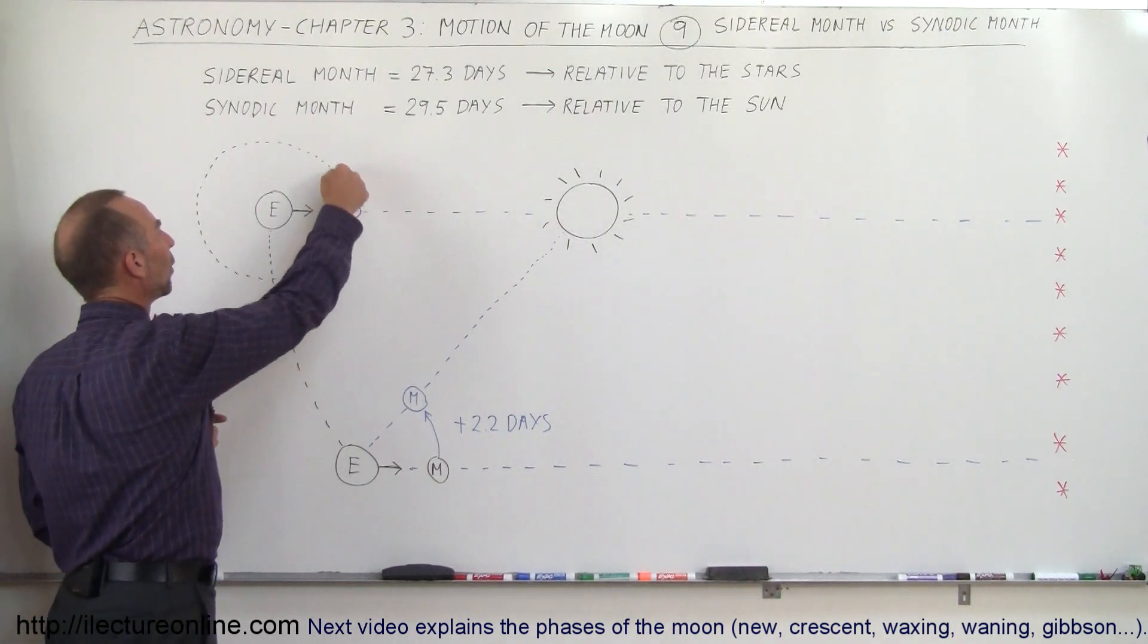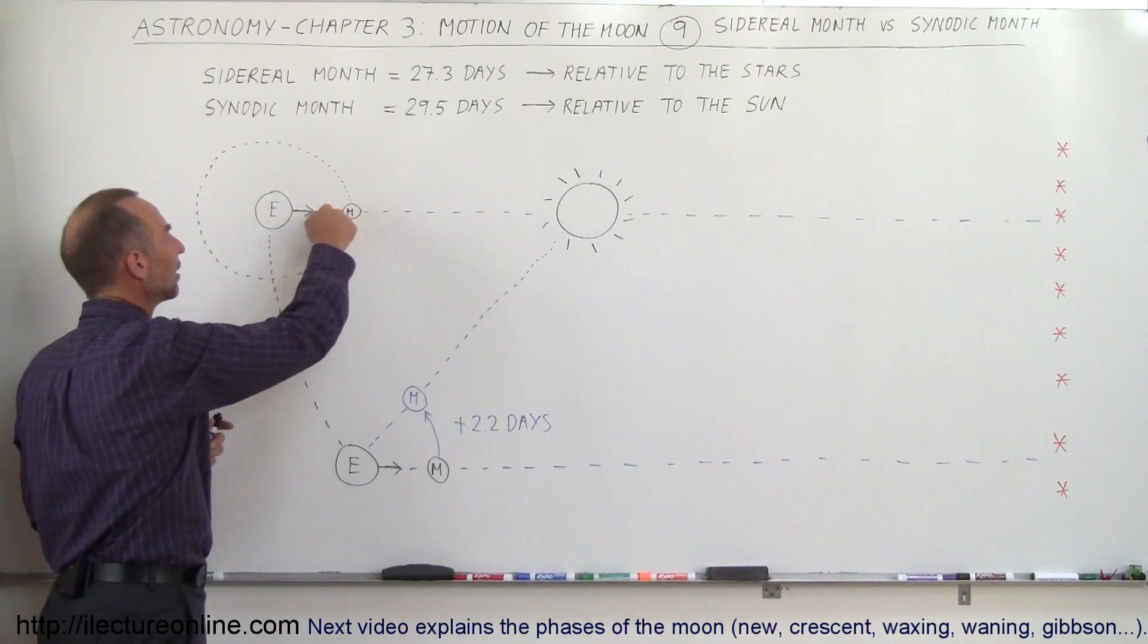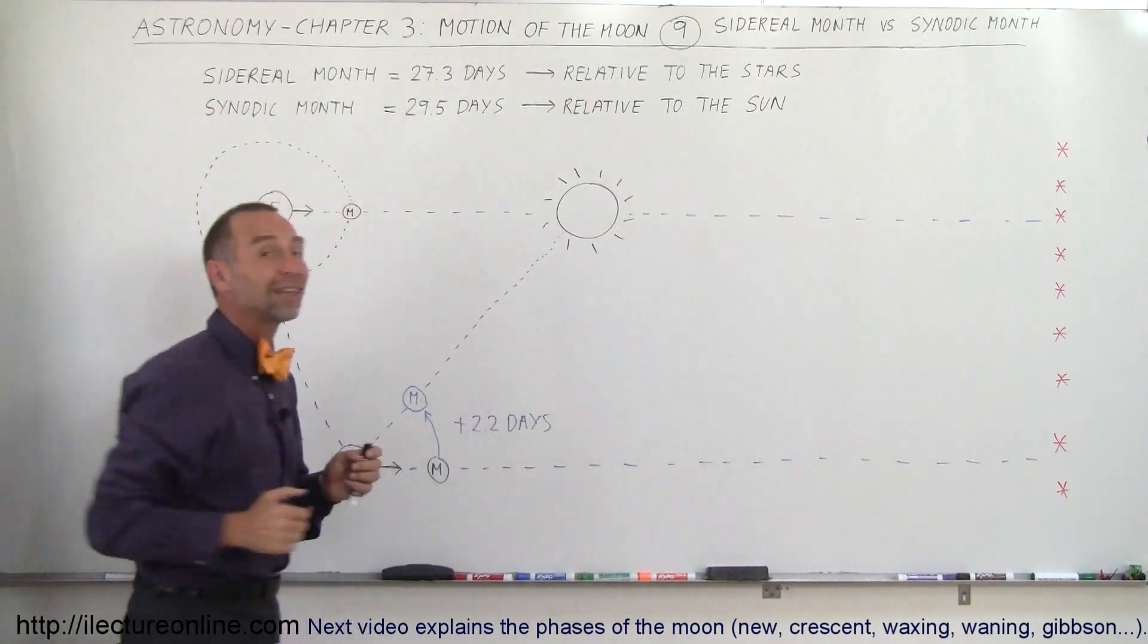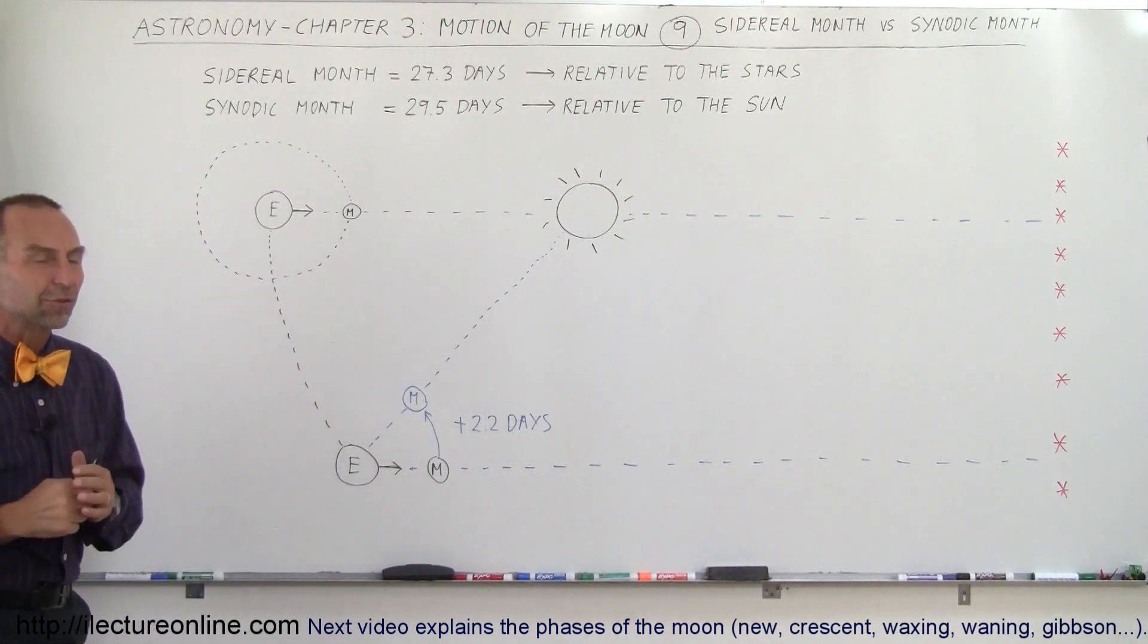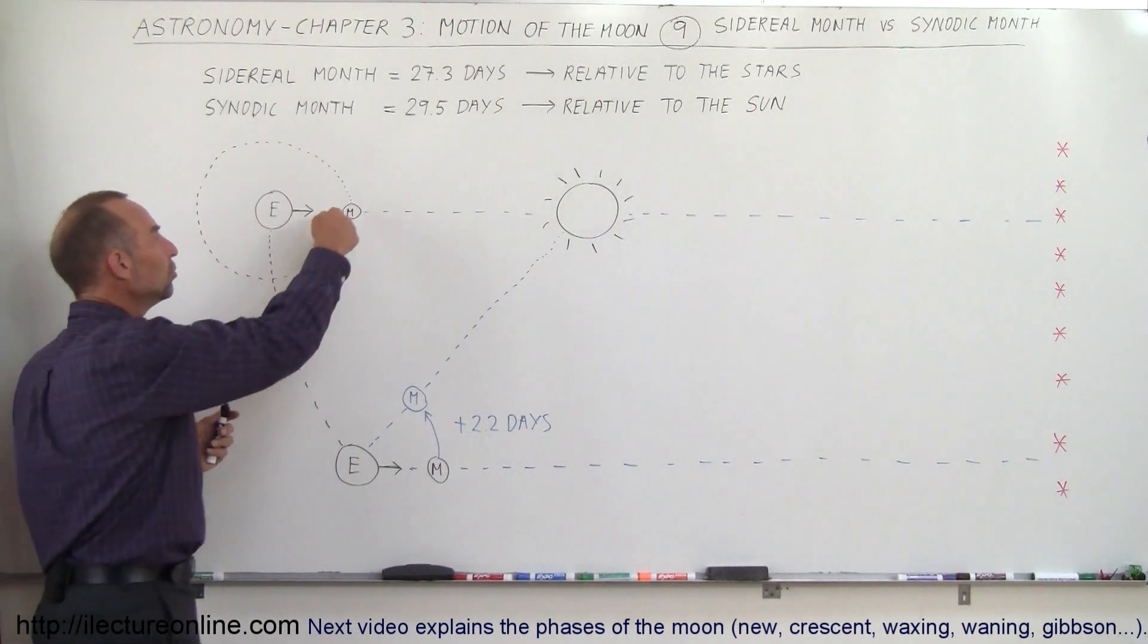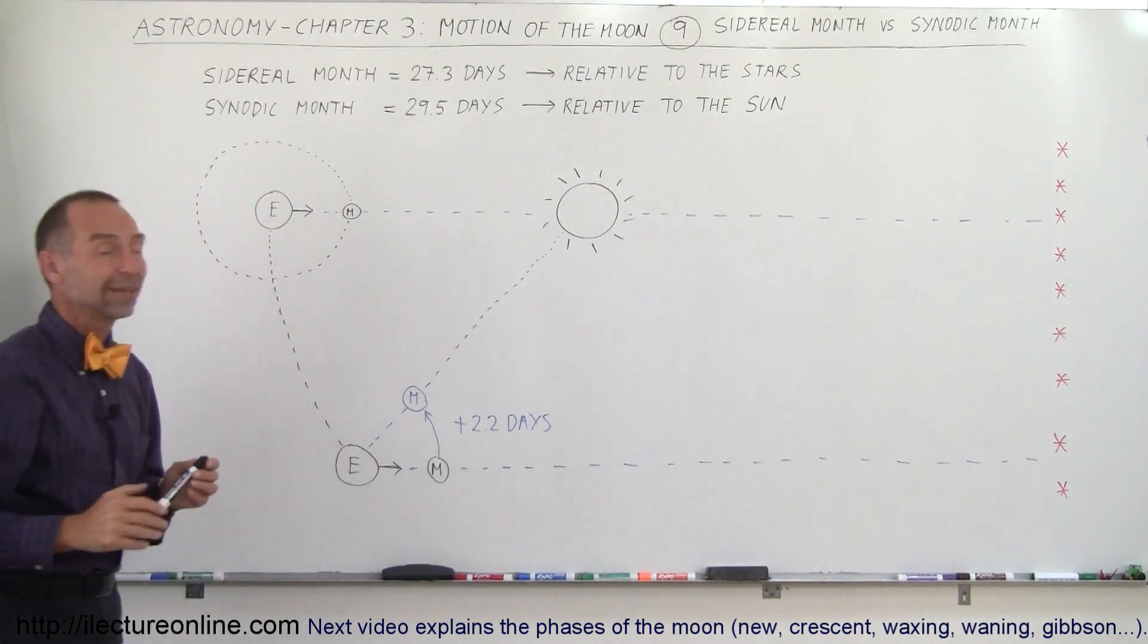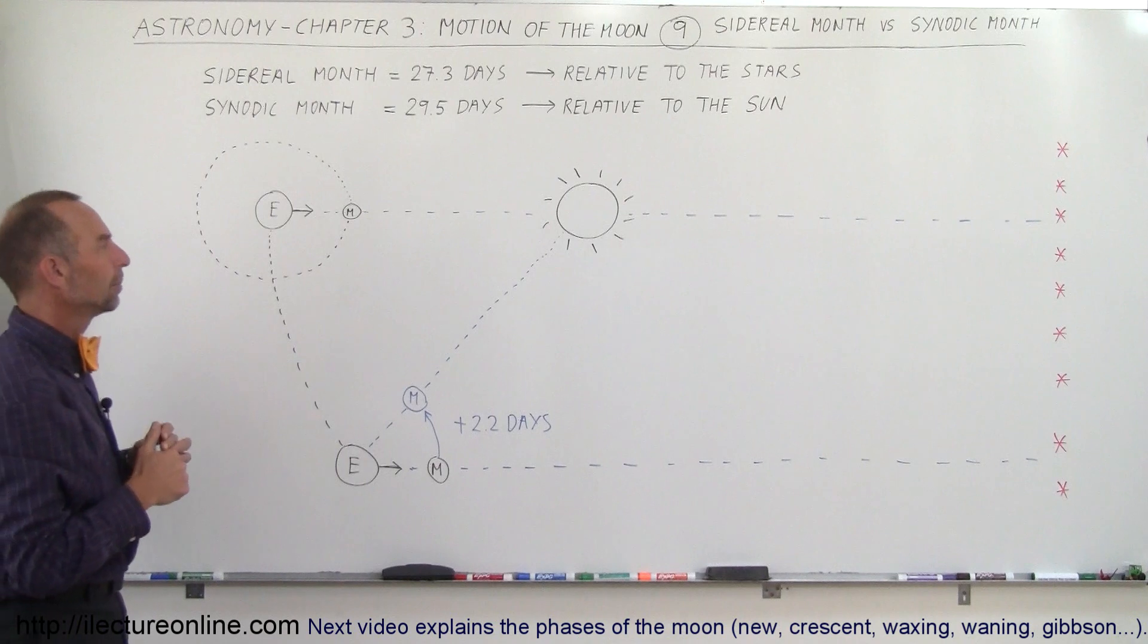The time that it takes for the moon to make one trip around the earth so that it faces the exact same point directly relative to the stars, and that's where the term sidereal comes from. Sidereal means relative to the stars. So the moon makes one complete trip around the earth in 27.3 days and that's called a sidereal month.